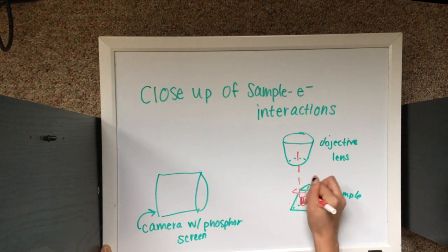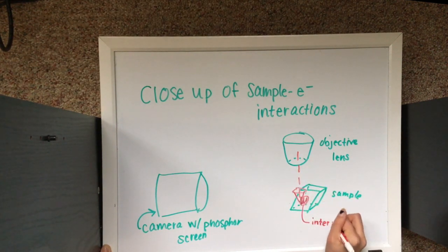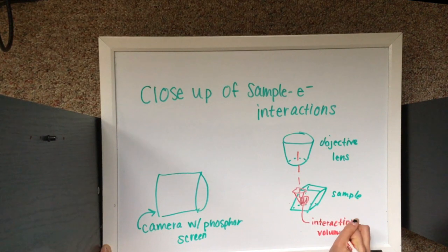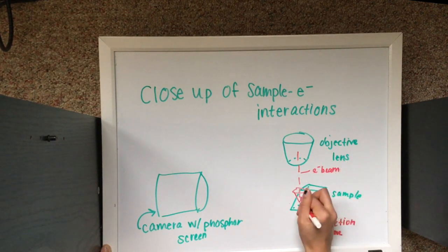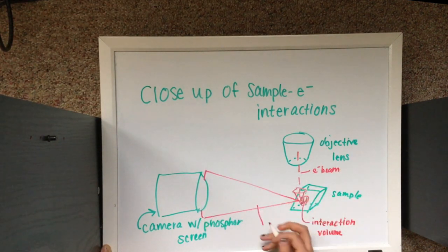The beam will trace along the surface of the sample, gathering information about the structure of the lattice at each point. Wherever the Kikuchi pattern changes, the beam has entered a new grain with a new orientation.